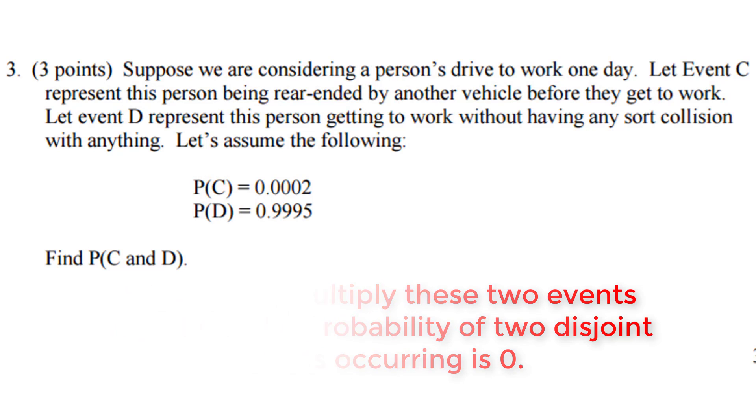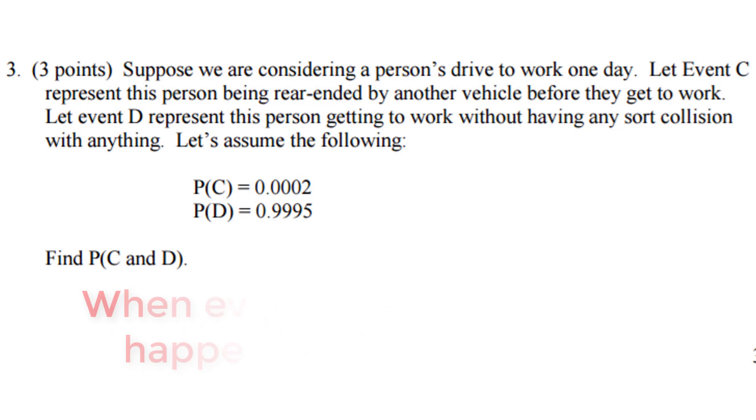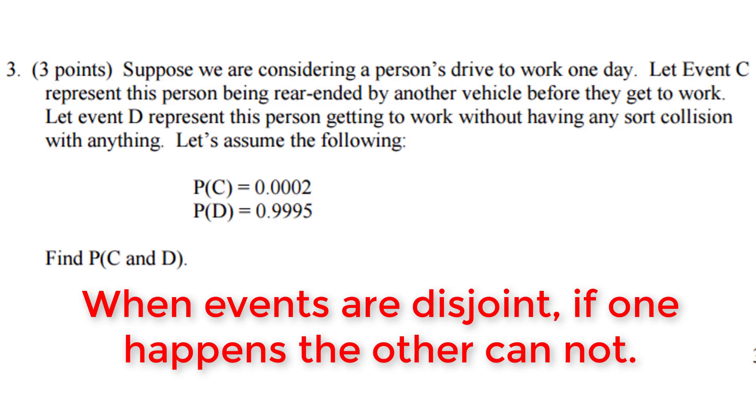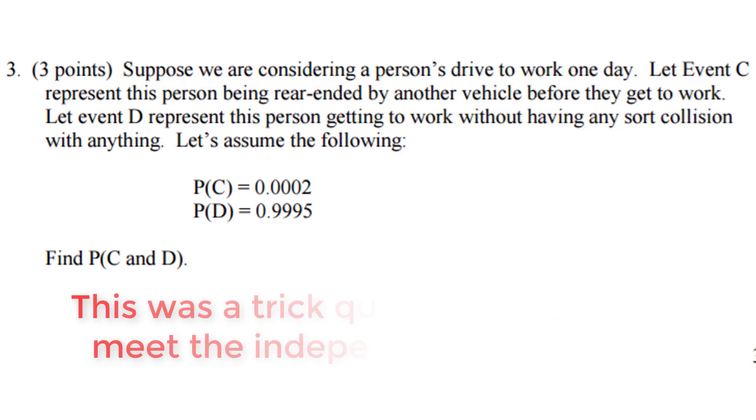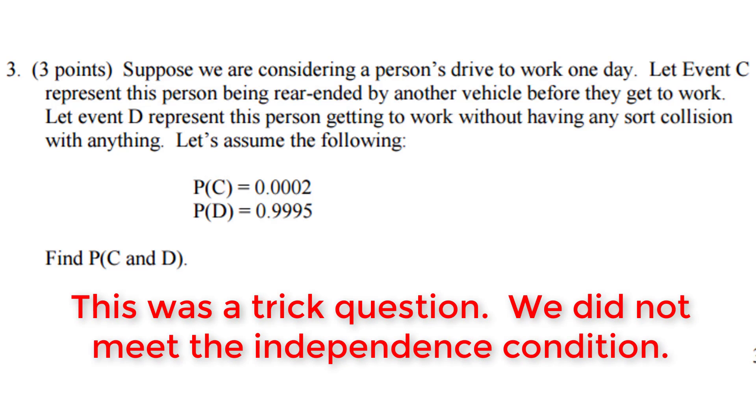Because these are disjoint events. As soon as you get to work safe and sound, we know you did not get rear-ended, so they can't both happen. As soon as we know you got rear-ended on your way to work, we know you did not get to work safe and sound. So once again, we do not meet the condition of independence right here. Getting to work without any sort of collision depends on if you got rear-ended on your way to work.